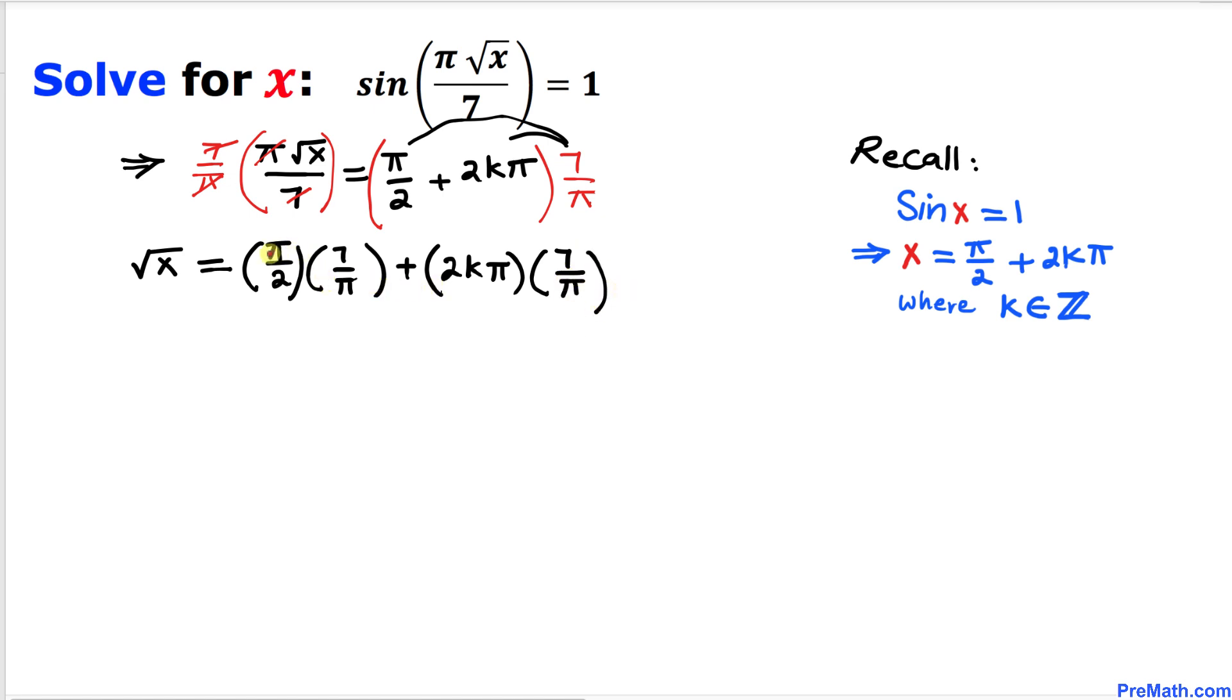The pi terms cancel out. Therefore we get square root of x equals 7 divided by 2 plus 14k. Let me call this equation number 1.